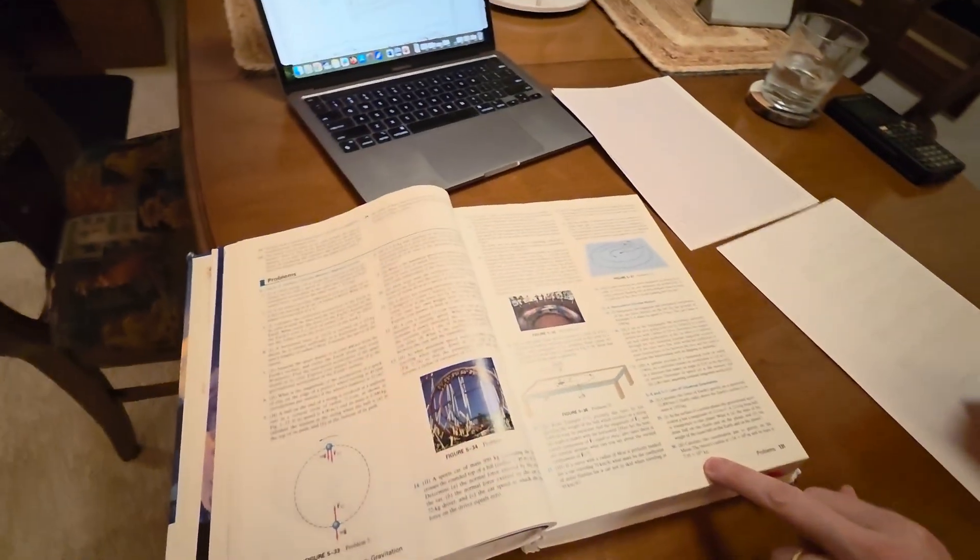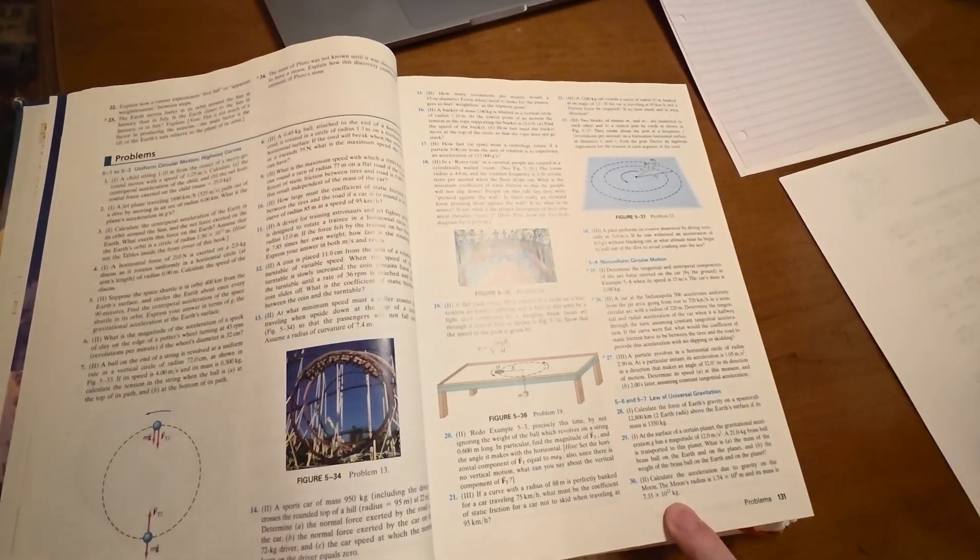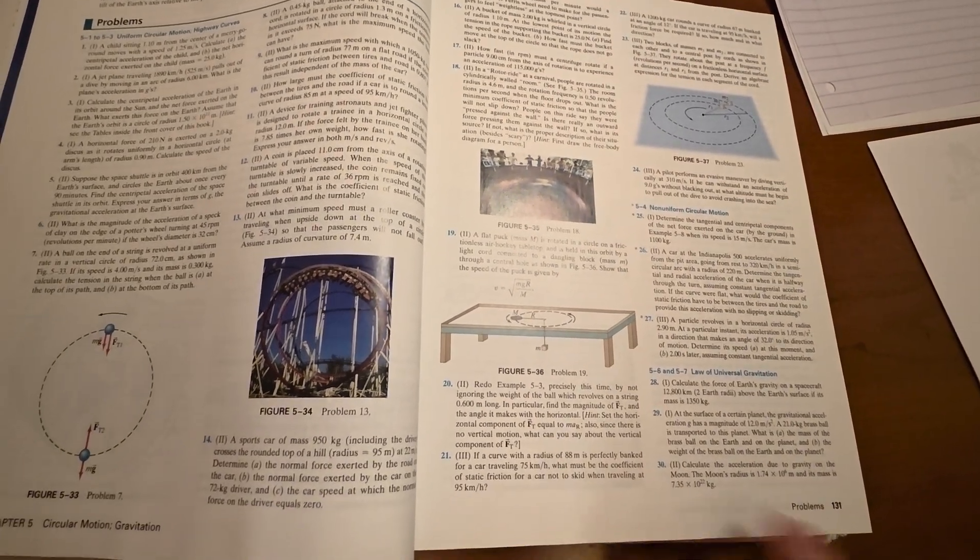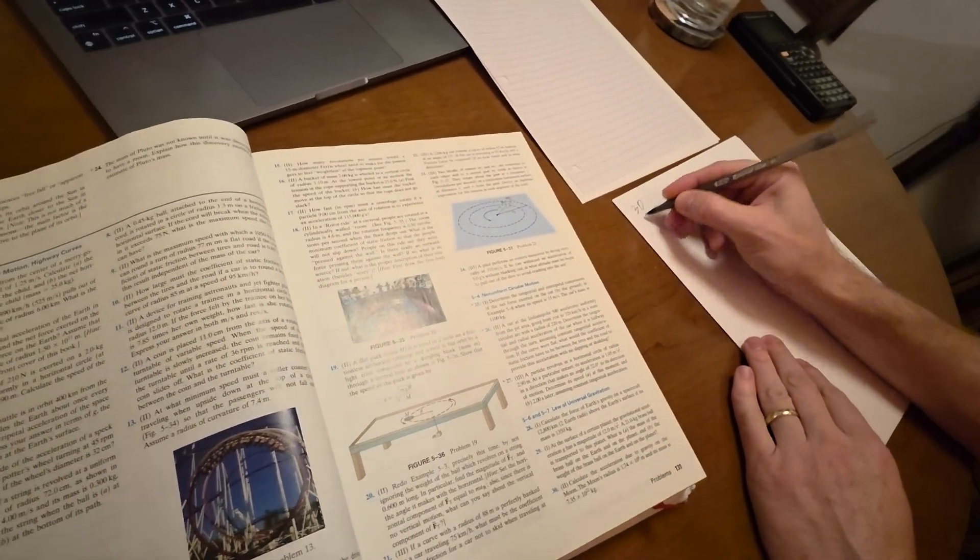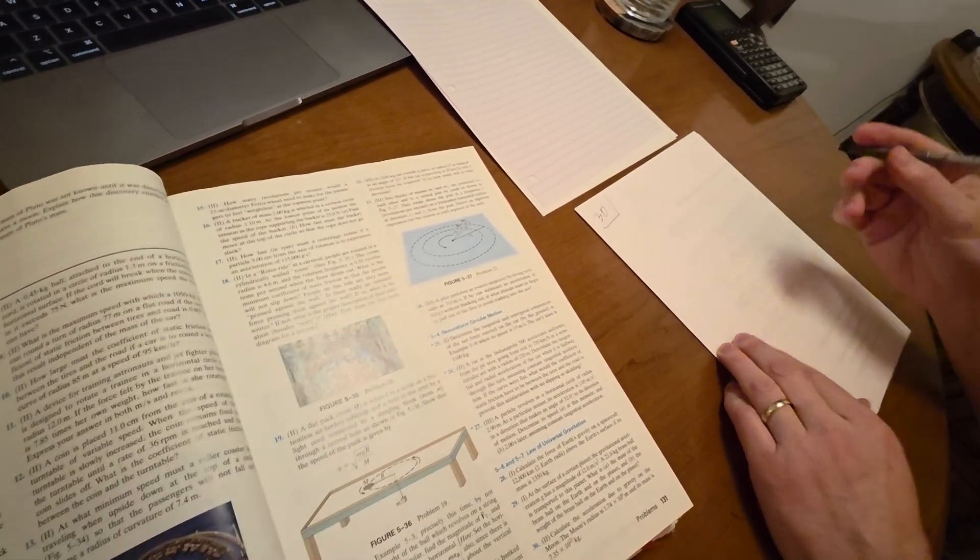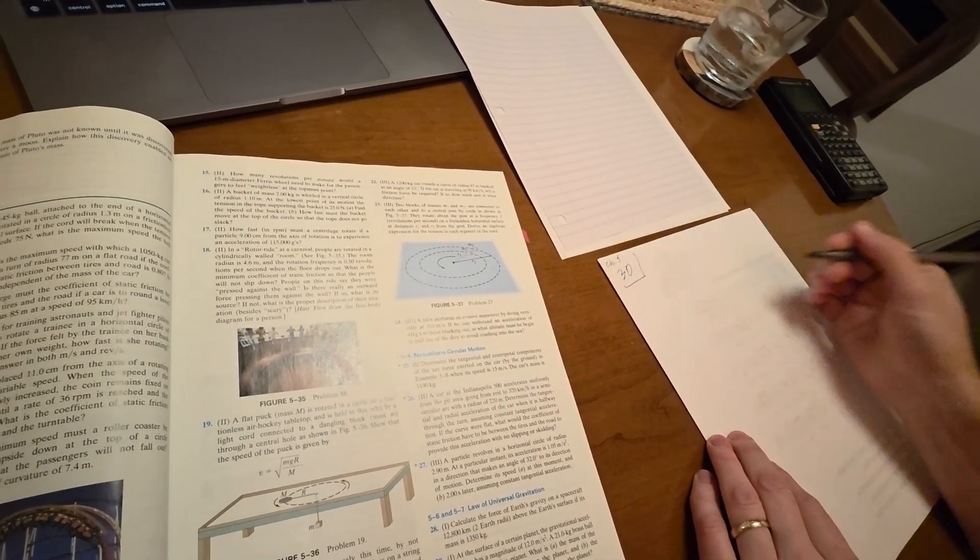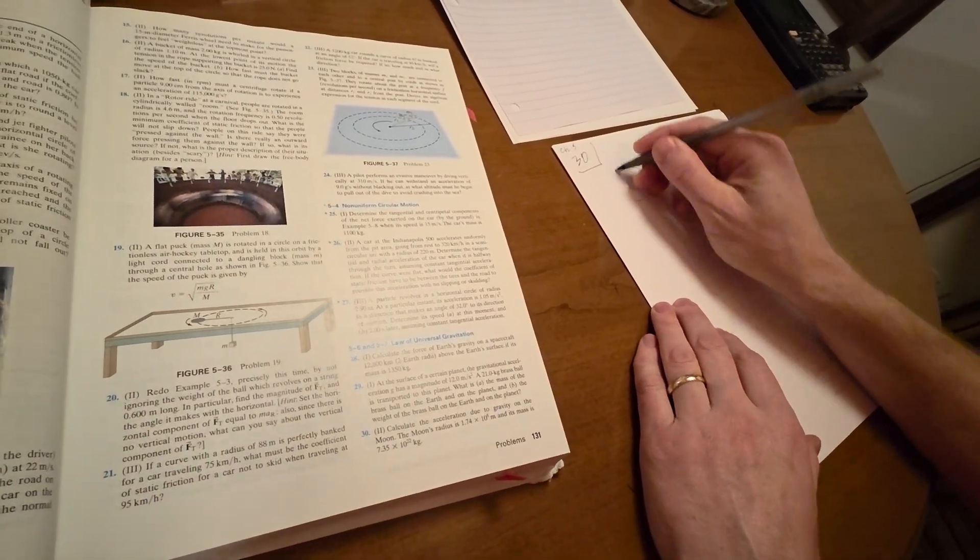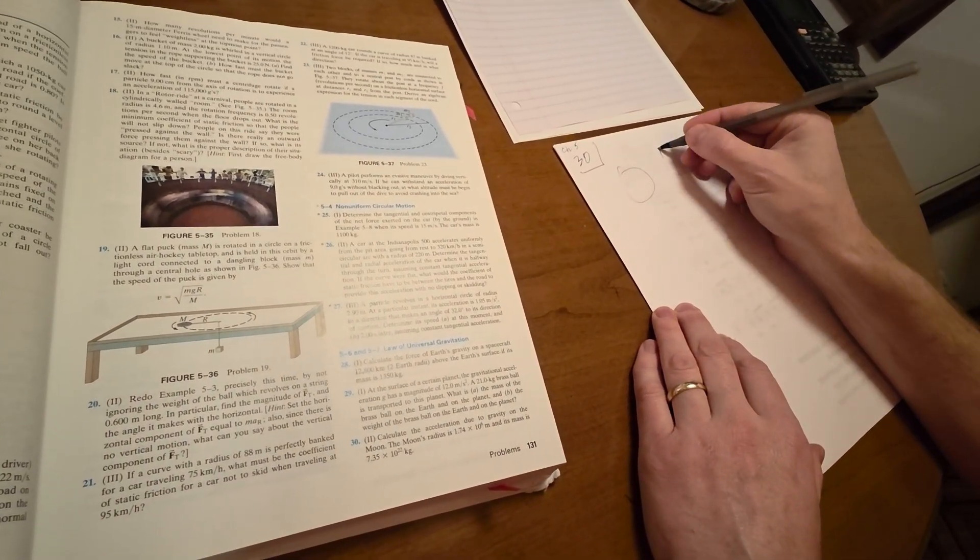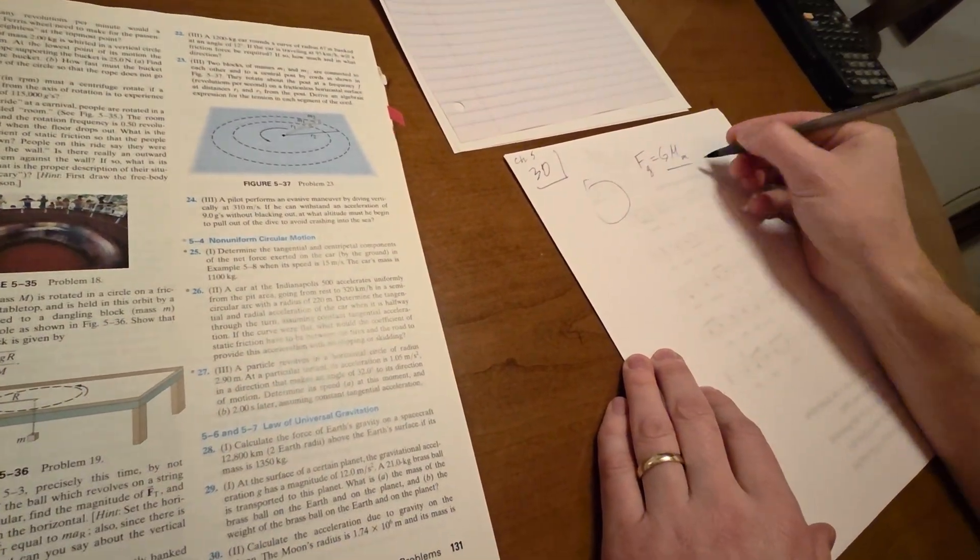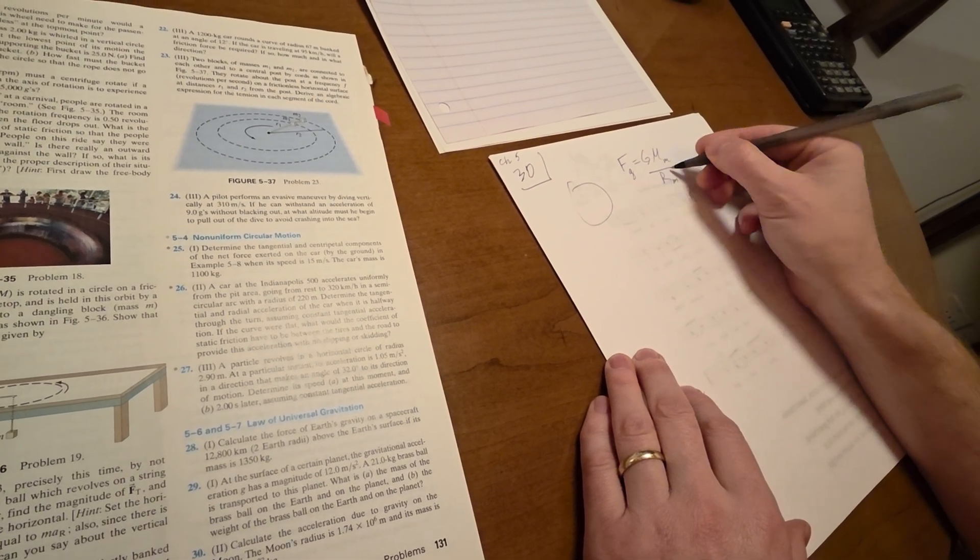I'll give you an example of how this works. We're going to do problem number 30 from chapter 5 in the Giancoli book. First thing we're going to do is read the problem: calculate the acceleration due to gravity on the moon. The moon's radius is blah and its mass is blah. So I've got my scratch paper stacked up here, one-sided paper. As soon as I get done with this, I'm just going to recycle it. So I got chapter 5, number 30, and I'm going to calculate the acceleration due to gravity on the moon. I'm going to set this up. So here's the moon.